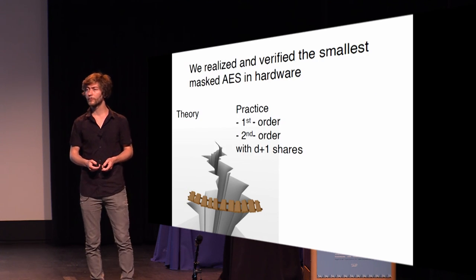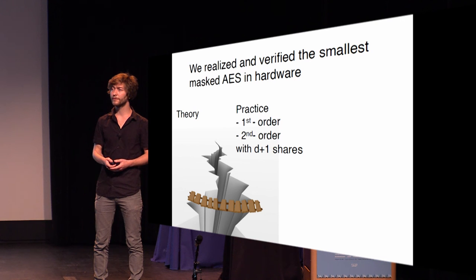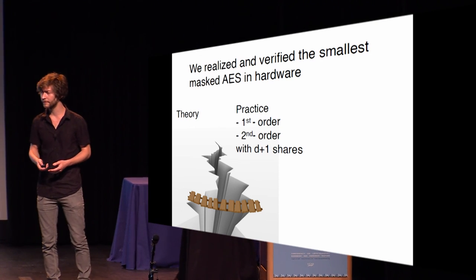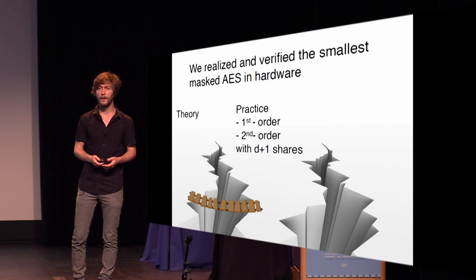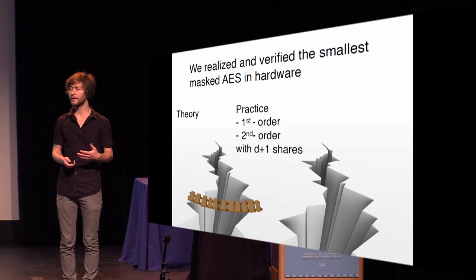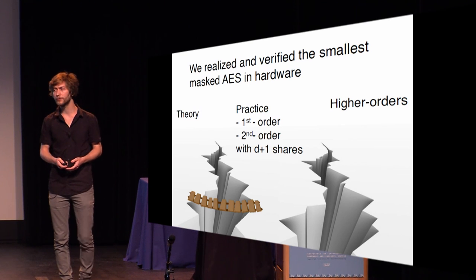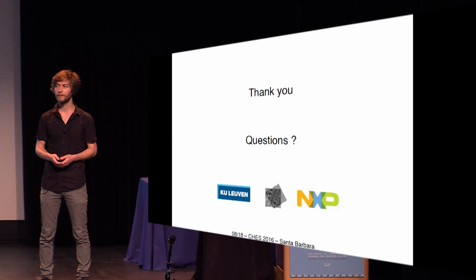To conclude: we went from theory to practice and realized the smallest masked AES to date. We verified it for first-order and second-order security, both with D plus one shares. As an engineer, it's always fun to know there's another gap ahead — for future work we could look at higher orders, but more interestingly, how to reduce the consumed randomness in our smallest masked implementation. Thank you for your attention.